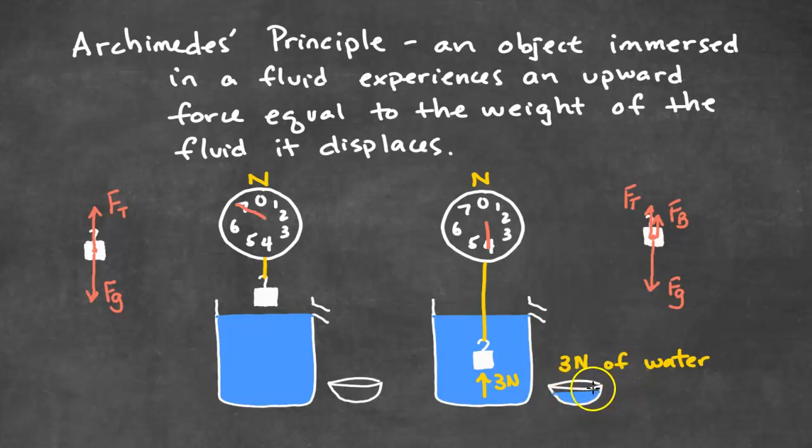In this case, it's 3 newtons. So the amount of water that's displaced has a weight of 3 newtons, which means that the buoyant force is 3 newtons. And so the force reading on the scale is only going to be 4 newtons. And here's a force diagram to illustrate that. The gravity force is 7 newtons. And the buoyant force is 3 newtons. So the tension force now is 4 newtons because 4 plus 3 is equal to 7.